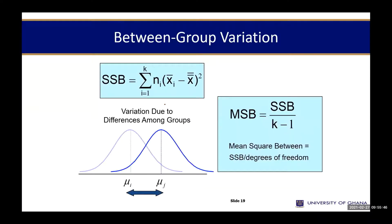If I find my SSB, I have to also go and find what you call the mean of square between MSB. MSB is SSB divided by K minus 1. I've defined K already.